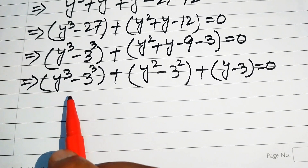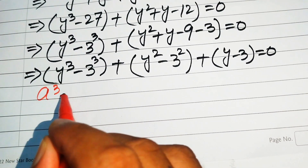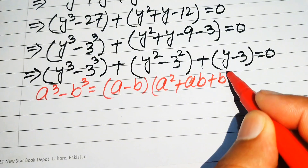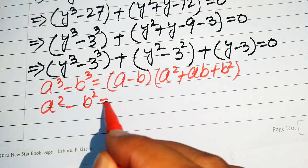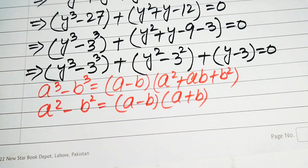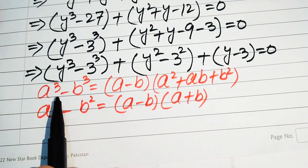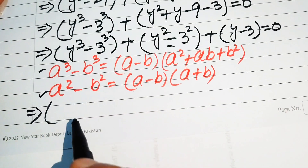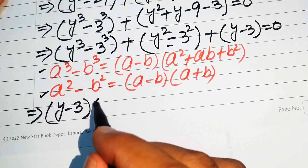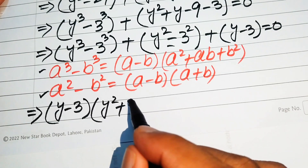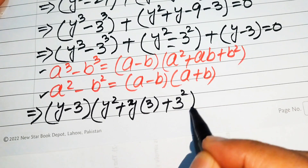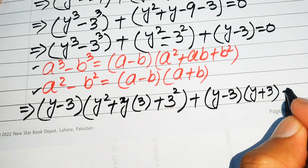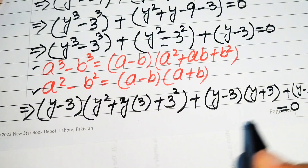We need two formulas: the cubic formula a cubed minus b cubed equals (a minus b)(a squared plus ab plus b squared), and the difference of squares formula a squared minus b squared equals (a minus b)(a plus b). Applying the cubic formula to the first term: y cubed minus 3 cubed equals (y minus 3)(y squared plus 3y plus 9). Applying the square formula: y squared minus 3 squared equals (y minus 3)(y plus 3). The remaining term is y minus 3, so the whole equation equals 0.